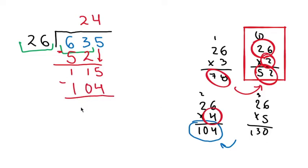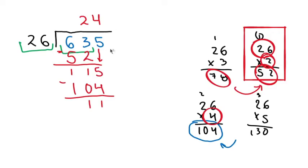Now we subtract: 5 minus 4 is 1; 1 minus 0 — you can't take anything away, so it stays as 1; and 1 minus 1 is 0. Leading zeros are not used, so we have a remainder of 11. We have now finished the main division.